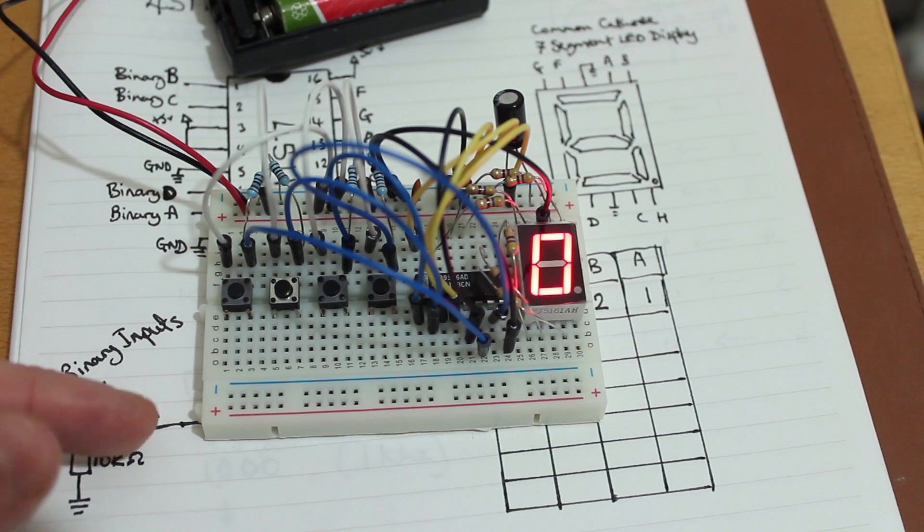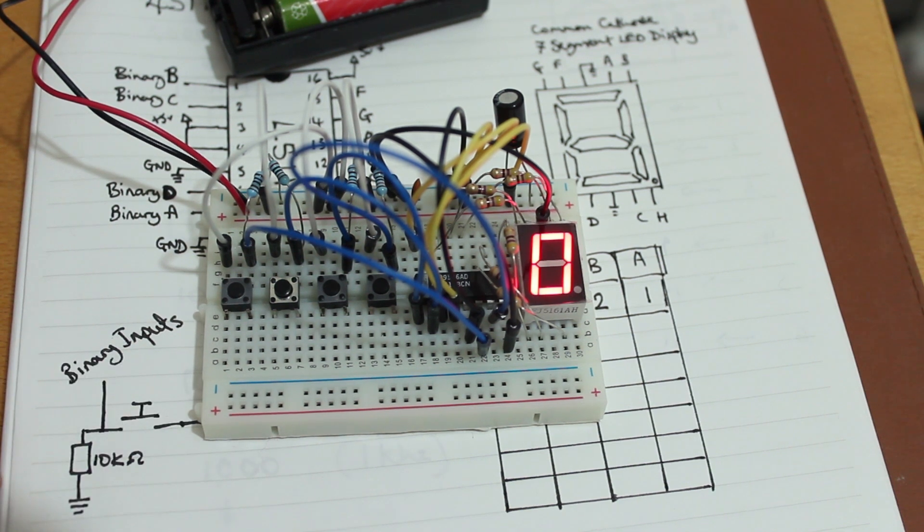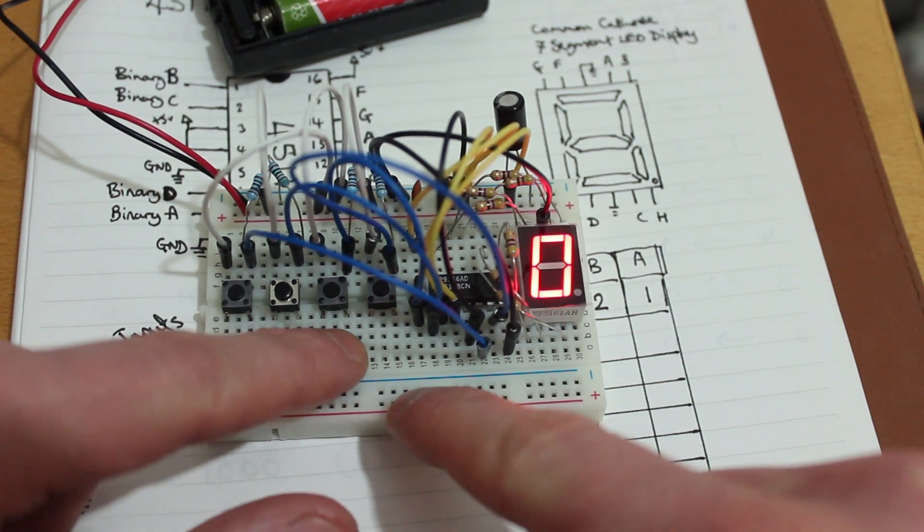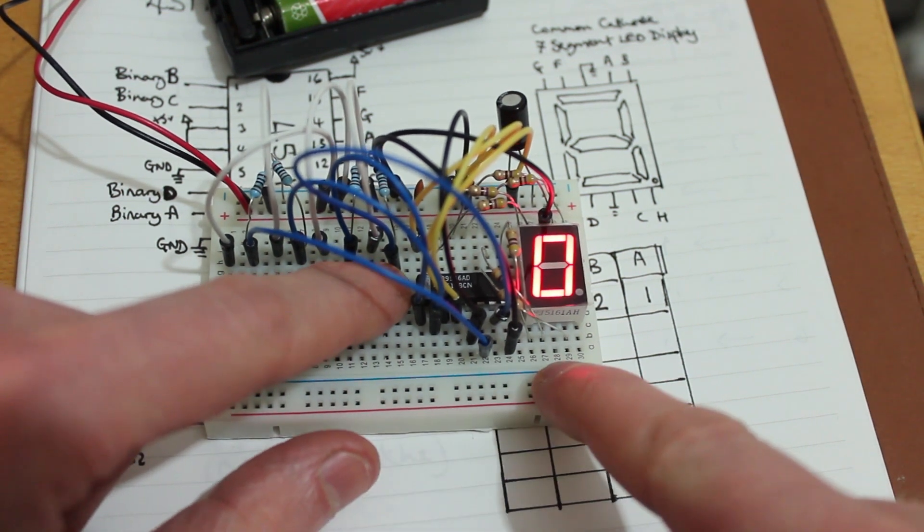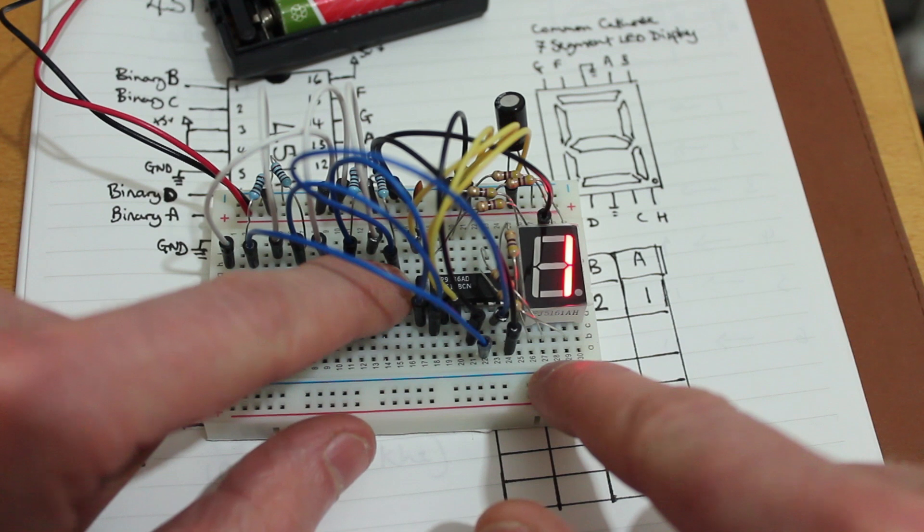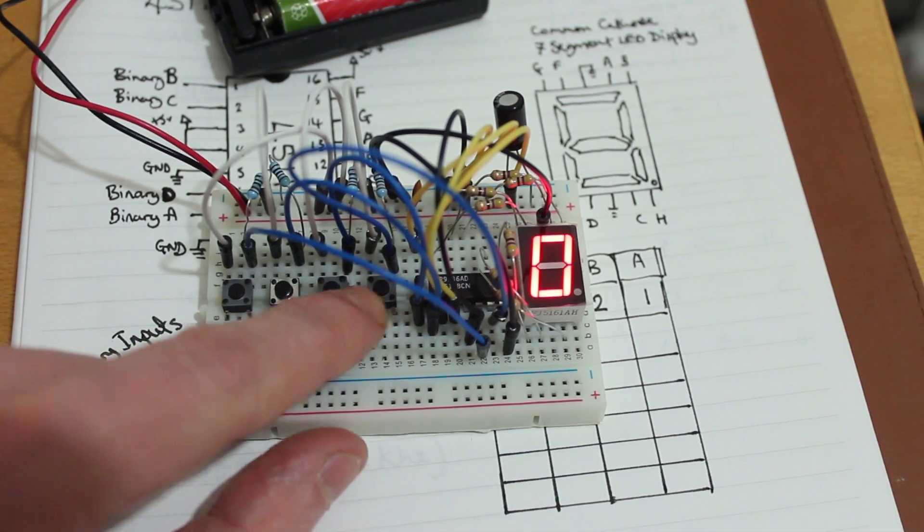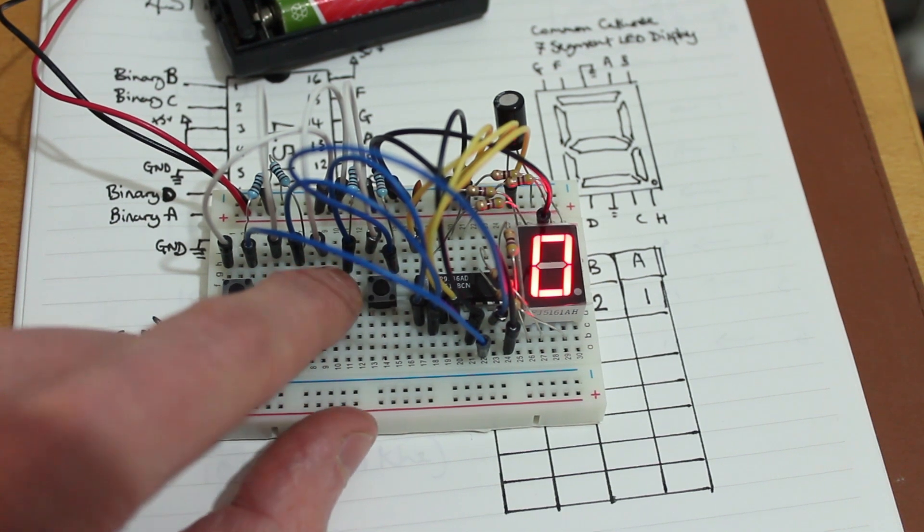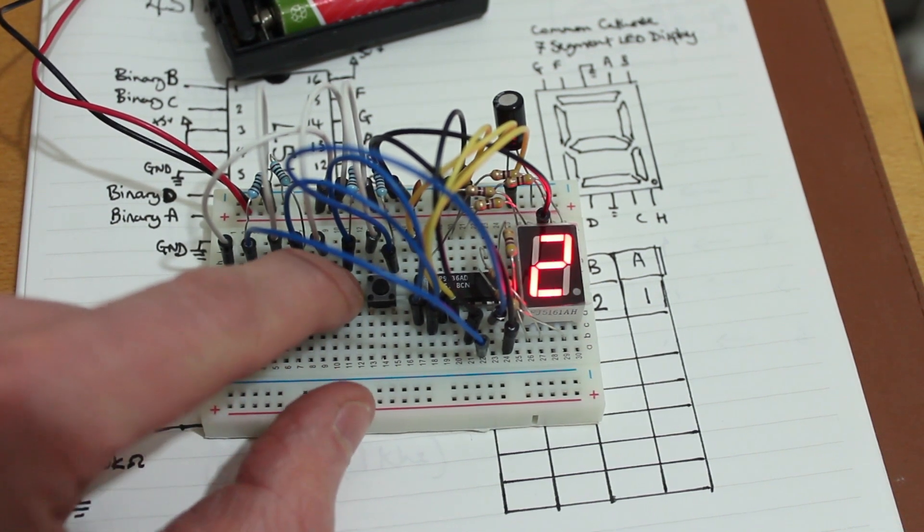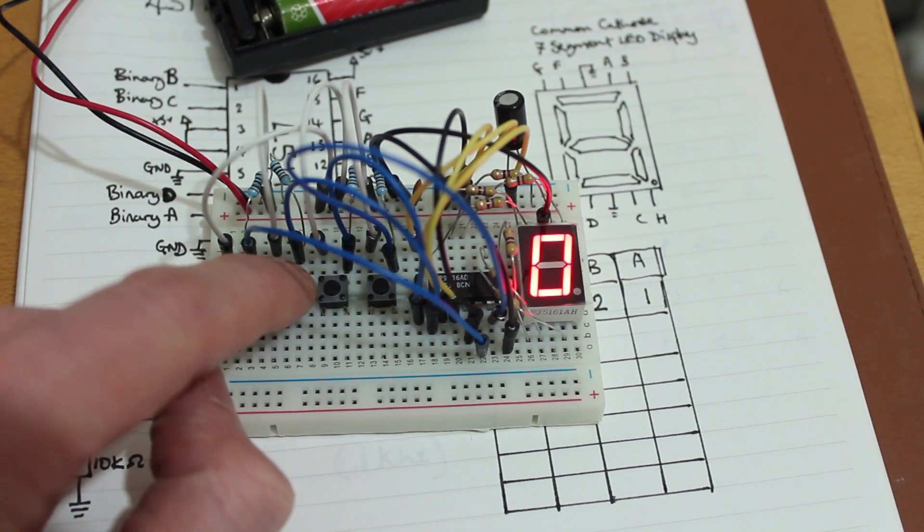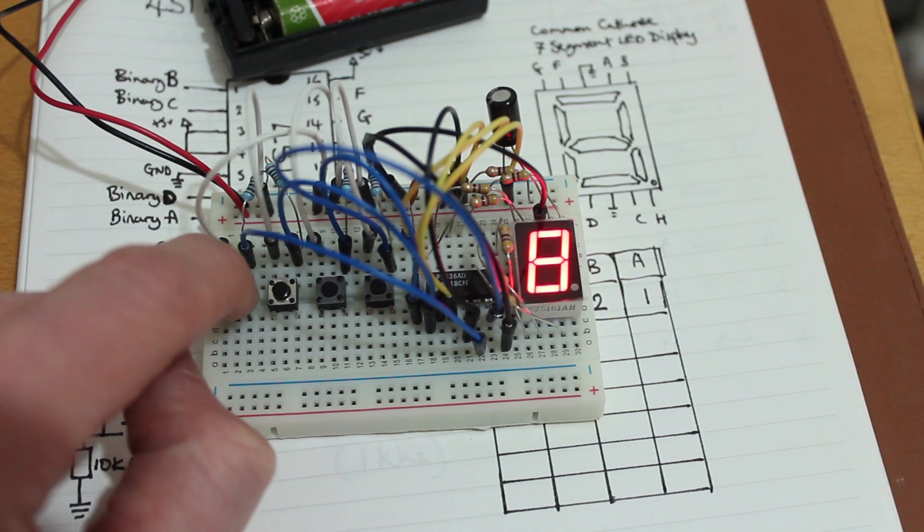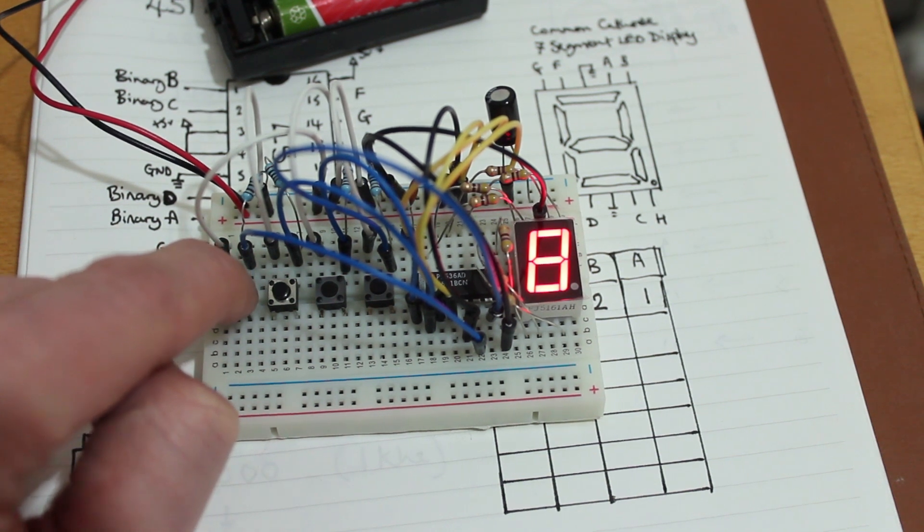So I've attached some buttons to it. So it has 4 inputs for the binary input, that's a 0 or a 1. And if I press these buttons starting at the first binary input there, it becomes a 1. So all zeros is nothing. So 1, 0, 0, 0 is 1. And then 0, 1, 0, 0 is 2. And then 0, 0, 1, 0 is 4. And then 0, 0, 0, 1 is 8.